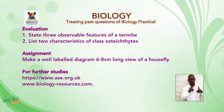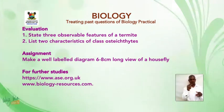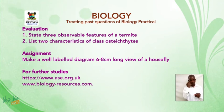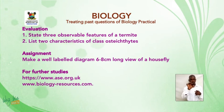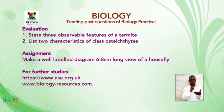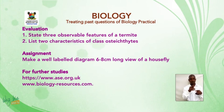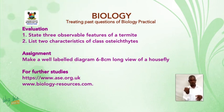Evaluation: state three observable features of a termite. List two characteristics of class Osteichthyes. Assignment: make a well-labelled diagram, 6 to 8 centimetres long, of a housefly. Follow all those instructions given earlier when making your drawing. For further studies, visit www.ase.org.uk or www.biology-resources.com.